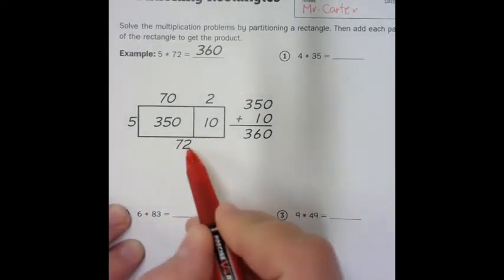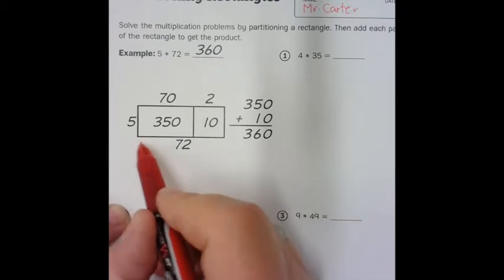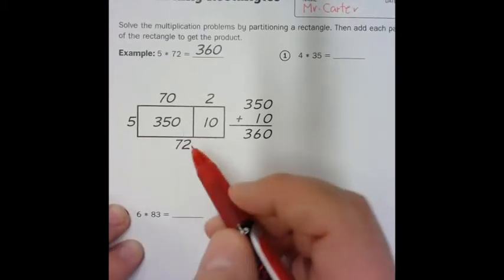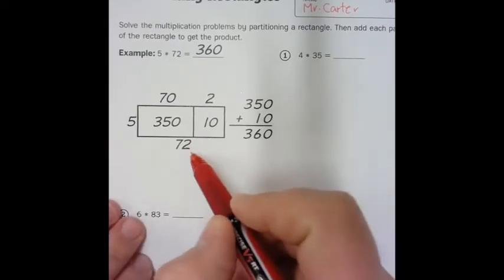What this 72 is down here is just showing that the whole rectangle is equal to 72. So that's just an extra number there and it really doesn't help you solve the problem, but it's just here to tell you that it's 72, the whole rectangle.